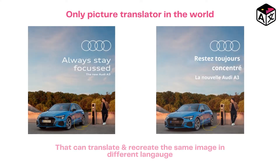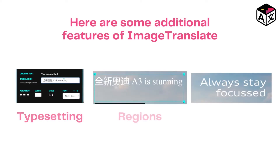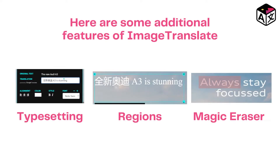ImageTranslate is a picture translation tool that can translate the text in a picture and recreate the same picture in a different language. It also has additional features that help you double-check the translation or the picture and make changes as per requirement.